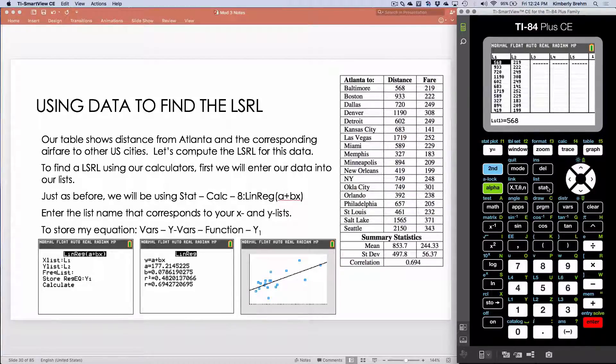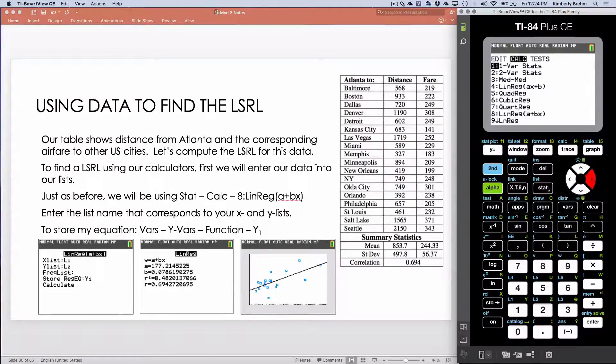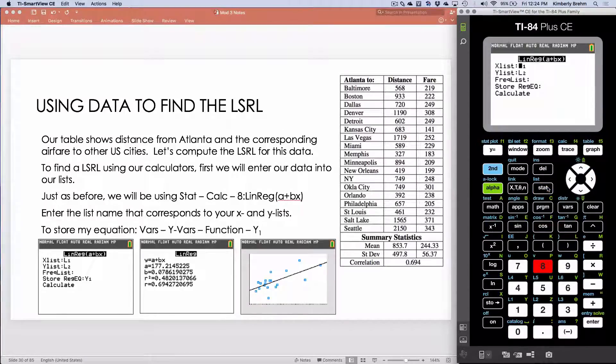Just as before, when I was trying to find my R value, I will go to Stat, Calc, 8. Just as before, I'm going to use whichever list, L1, L2 is where I have my data. Frequency list, I do not have.